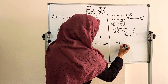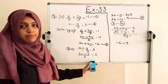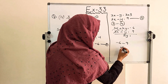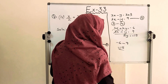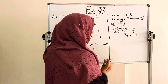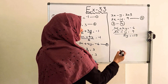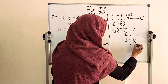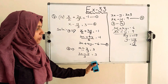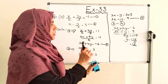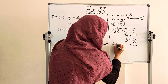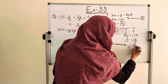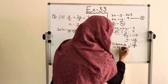And minus 6 minus 9 — both are negative, so we add and put the negative sign: minus 15. So 5y equals minus 15, and y equals minus 15 by 5, which equals minus 3. After this, substitute y equals minus 3 into equation number 4.